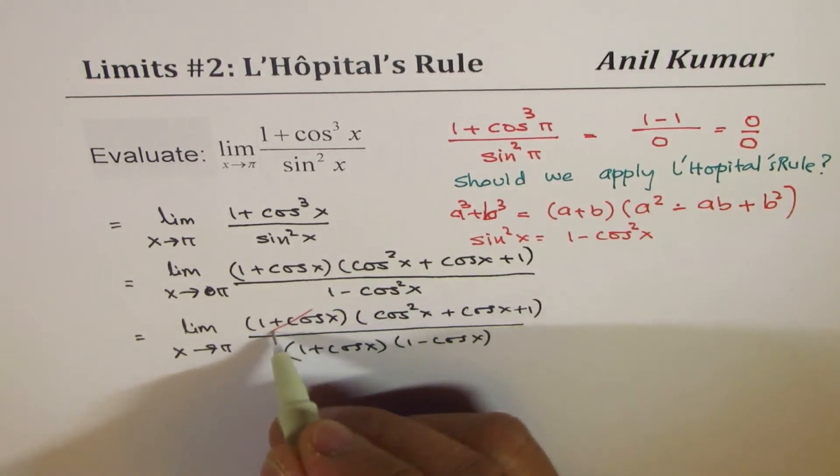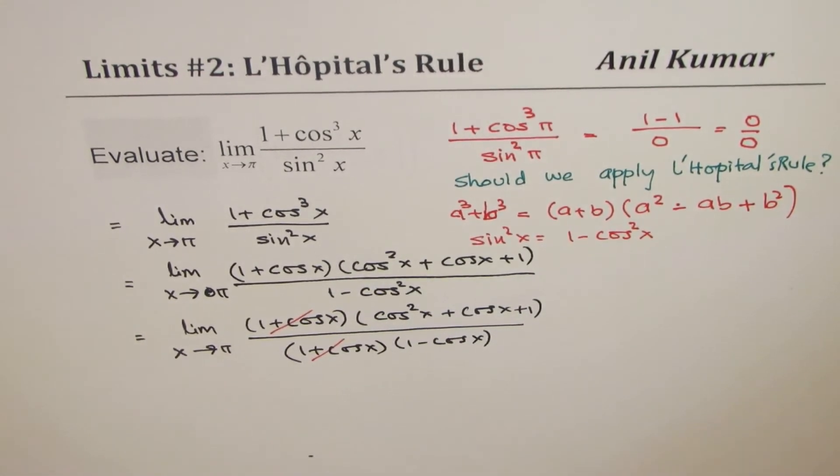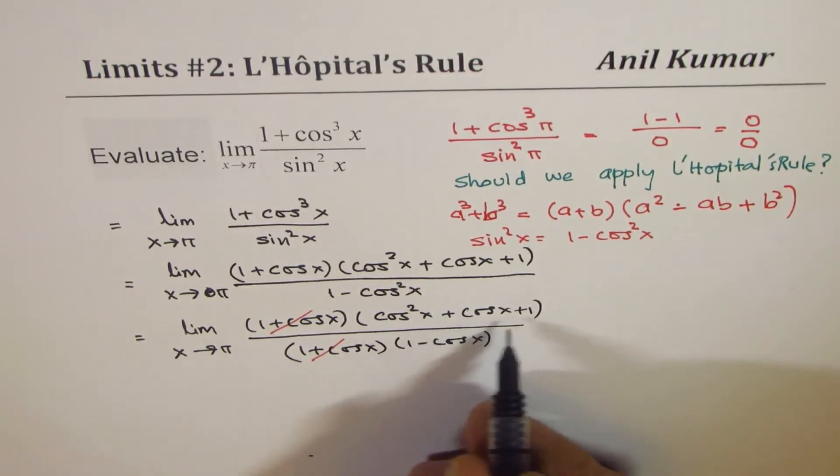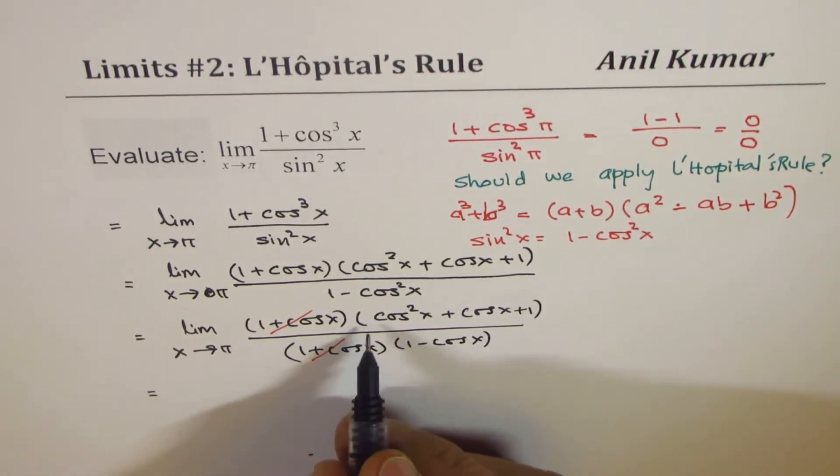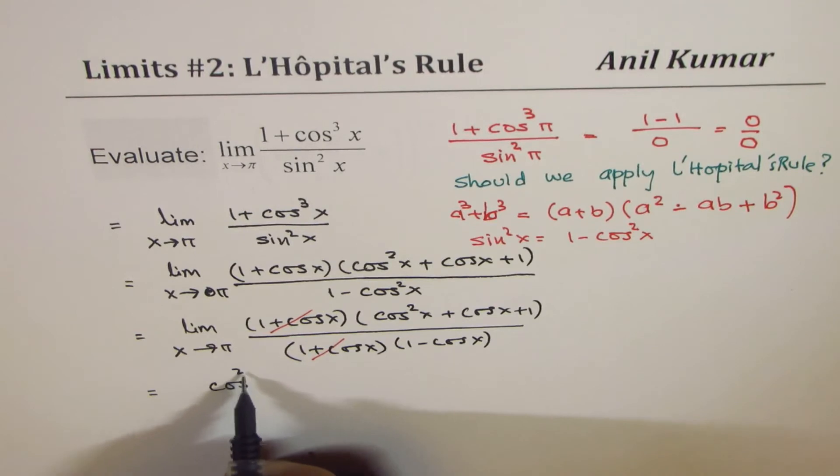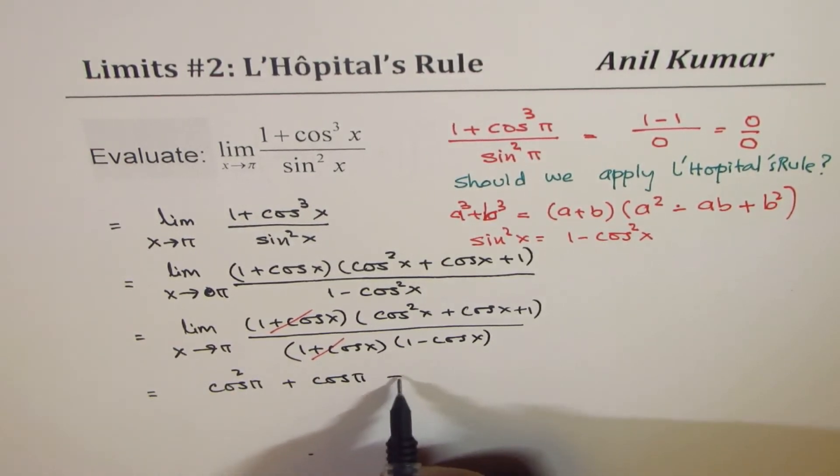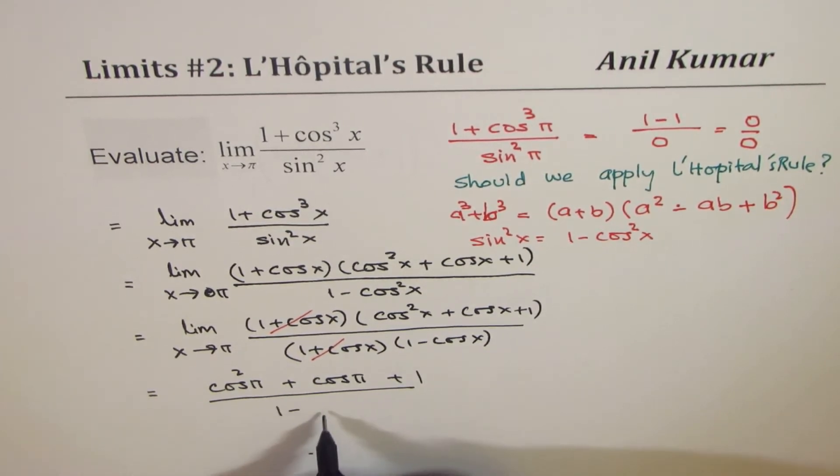There is a common factor (1 + cos x) which cancels out. Now we can substitute π and get our result. We have cos²π + cos π + 1 over 1 - cos π, correct?